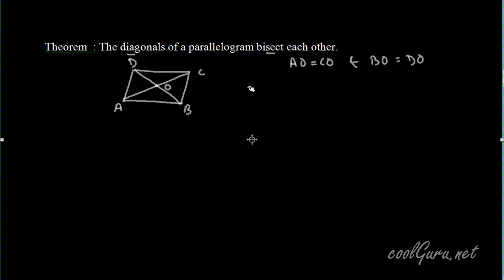Now it's given that ABCD is a parallelogram, and we know that in a parallelogram opposite sides are parallel. Therefore AD is parallel to BC and DC is parallel to AB.